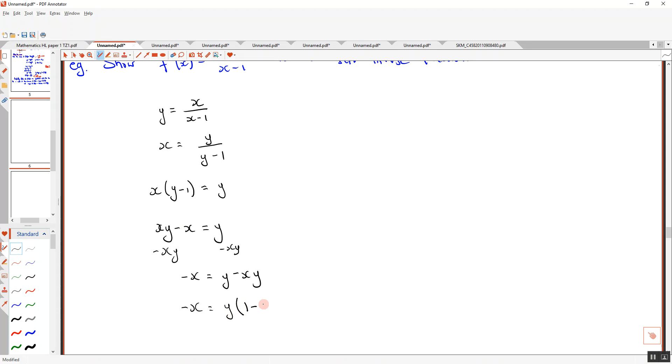I get... 1 minus x. And then to make it y equals, it's just going to be negative x over 1 minus x. Yes? Is it bad for me to try and spot like a pattern? Not pattern, but like an easier way of doing that? No. Don't. Just do it this way. Just do it that way? Yeah. Then our final step to get the last mark is to change your y to f of... Yes.